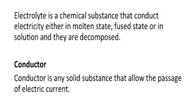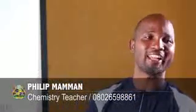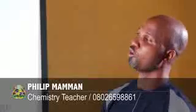The electrolyte is a chemical substance that conducts electricity either in molten state, fused state, or in solution, and they are decomposed. There are two types of electrolytes: strong and weak electrolytes, depending on their degree of dissociation. Strong electrolytes dissociate completely, while weak electrolytes dissociate partially in solution.